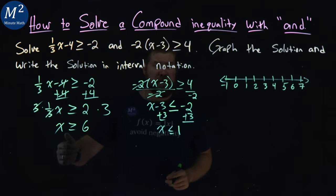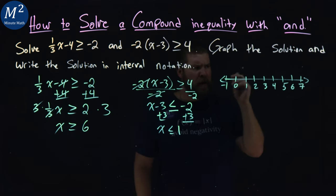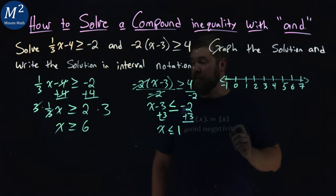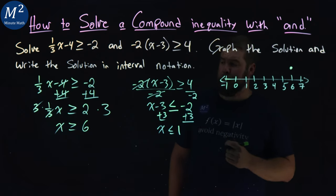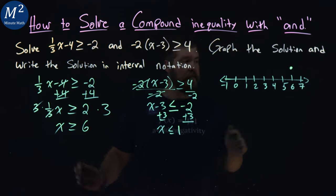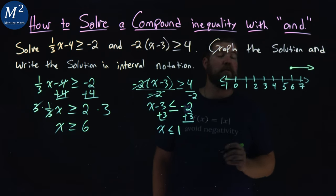Let's graph our first inequality: x ≥ 6. Since it equals 6, we have a closed circle. I'll put it on the top of the number line here. And since it's also greater than 6, our arrow goes to the right.